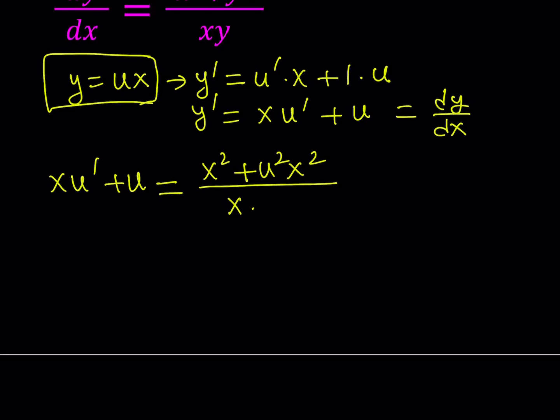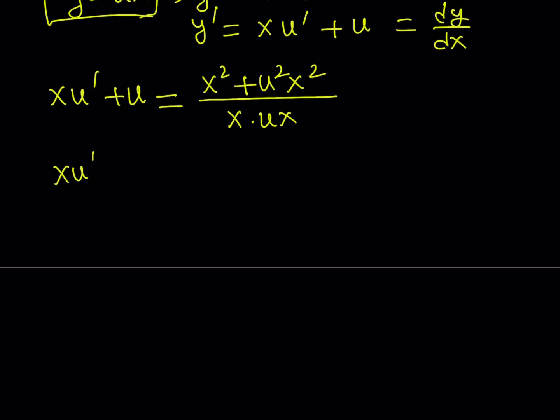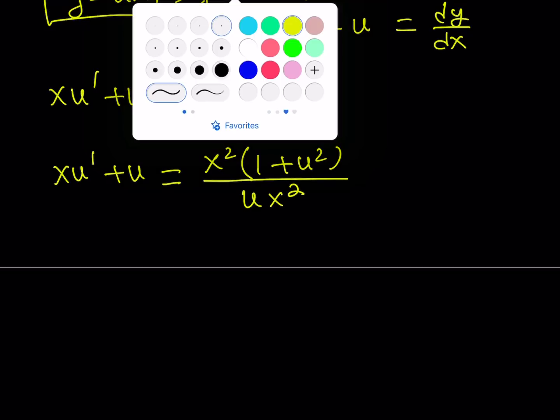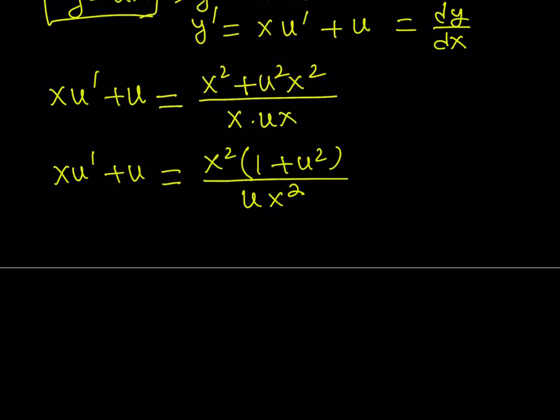And the same thing at the bottom, I'm going to multiply x by y which is ux. So let's go ahead and simplify this a little bit more. xu' + u is equal to, now we can basically factor out x² that gives us 1 + u². And at the bottom we get something like u times x². Now at this point we can just go ahead and simplify this.